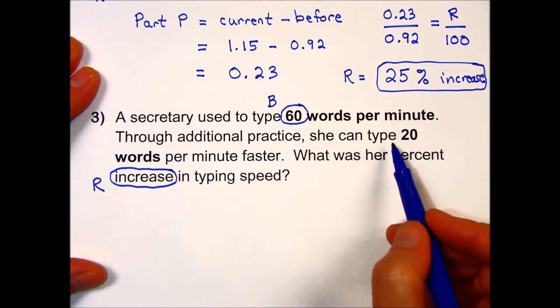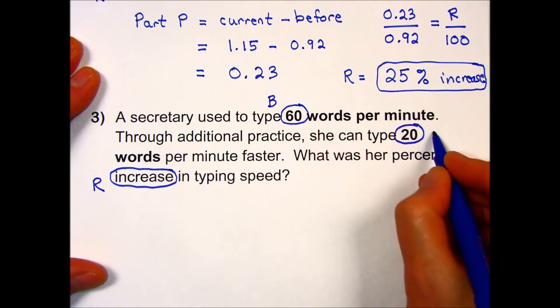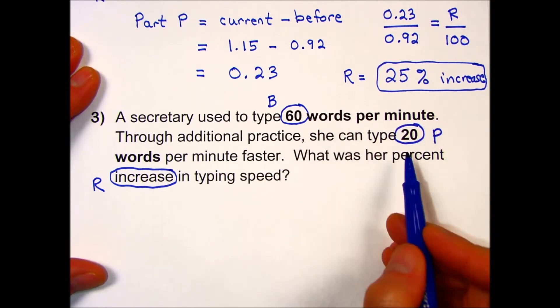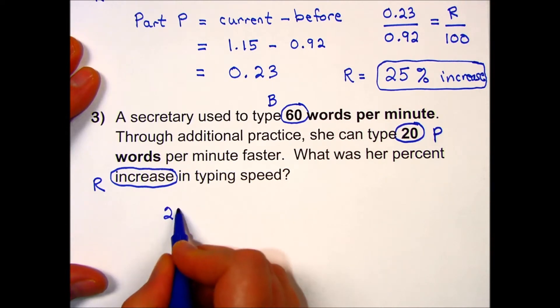I'm actually given the change in this case. 20 words per minute faster is the part, the change. There's no need to do a subtraction because they give me the part.